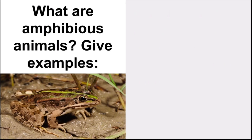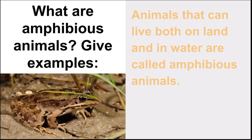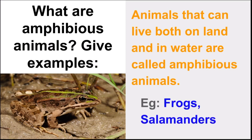Next question: What are amphibious animals? Give examples. Animals that can live both on land and in water are called amphibious animals. Examples are frogs and salamanders.